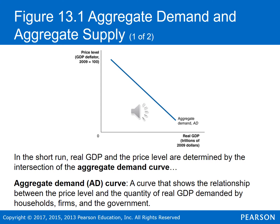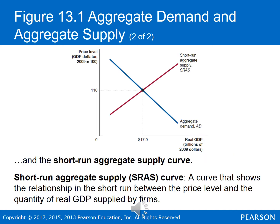So in the short run, real GDP and the price level are determined by the intersection of the aggregate demand curve and the aggregate supply curve. The aggregate demand curve shows a relationship between the price level and the quantity of real GDP demanded by households, firms, and the government. The aggregate supply curve shows the relationship in the short run between the price level and the quantity of real GDP supplied by firms. We're going to put these together to help understand what's going on in the macroeconomy.